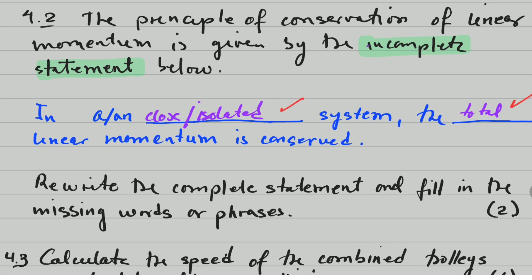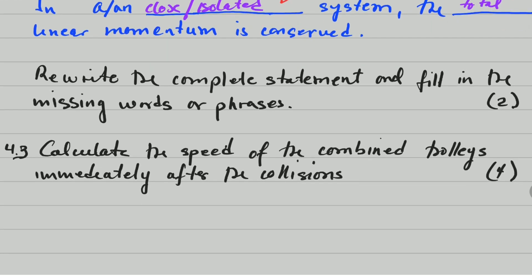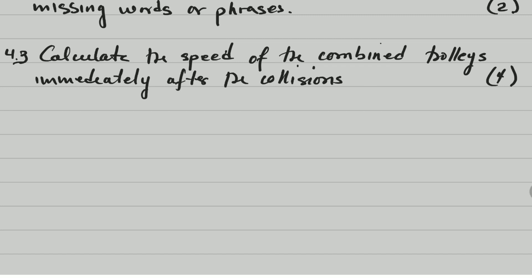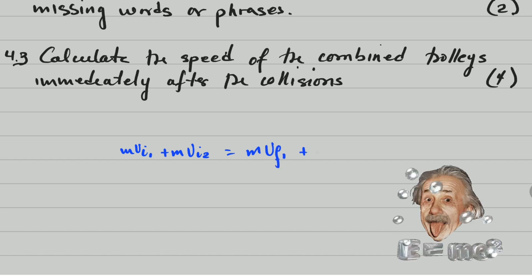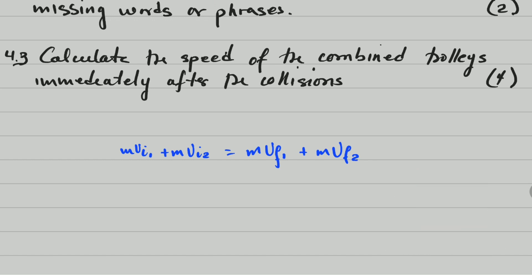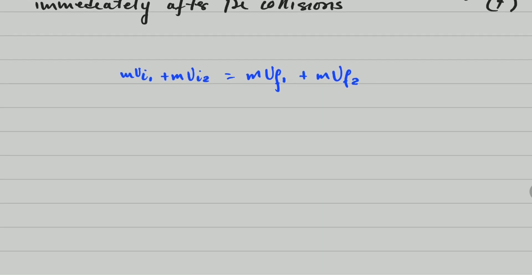That statement is worth two marks: one mark for 'closed or isolated system' and one mark for 'total.' Now question 4.3 says: calculate the speed of the combined trolley immediately after the collision. We use the law of conservation of linear momentum: mass one times initial velocity one plus mass two times initial velocity two equals mass one times final velocity one plus mass two times final velocity two.